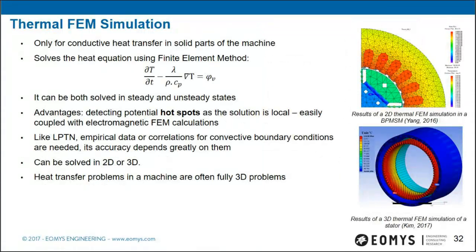The second method is finite element simulation of the solid parts of the machine, solving the heat equation directly on those parts. Its main advantage is local resolution, allowing detection of potential hotspots. It is also easily coupled with electromagnetic FEM calculations. Like LPTN, it requires empirical data or correlations for boundary conditions, and result accuracy depends greatly on them. It can be solved in 2D or 3D — but unlike electromagnetic problems, heat transfer problems are often inherently 3D.